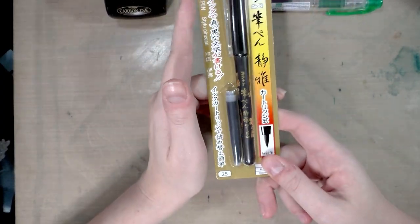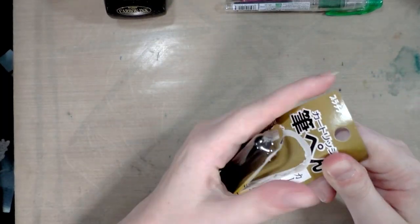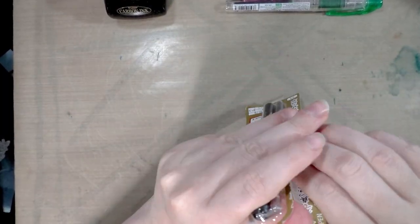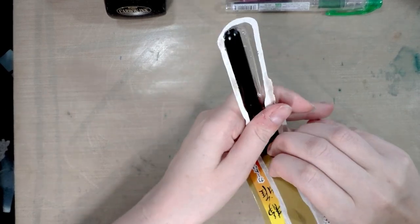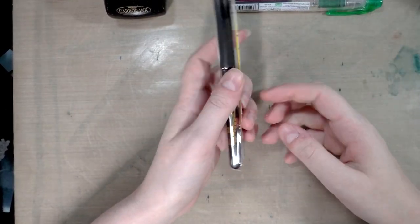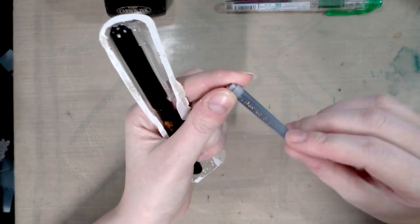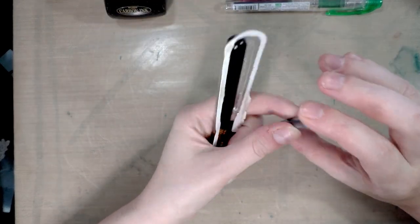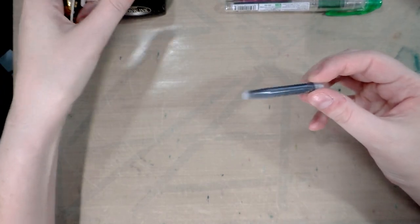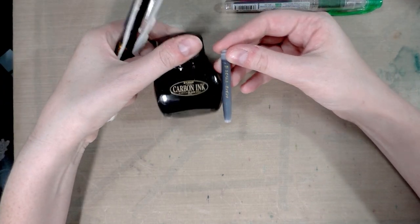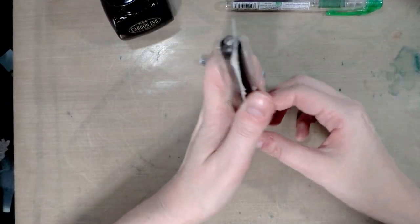Platinum is a Japanese brand of stationary supplies and this is probably intended for calligraphy, but you guys should know by now I am probably going to use it for art. It comes with a small Platinum cartridge of the, I assume, Platinum Carbon Black ink. And I have a few of these laying around my studio.